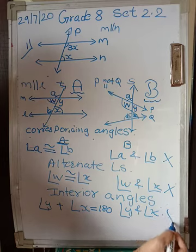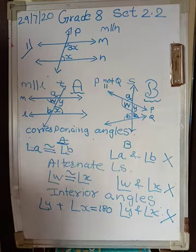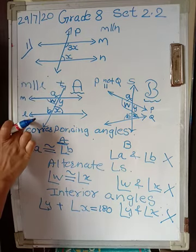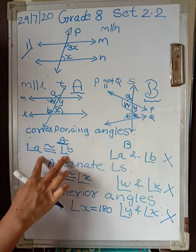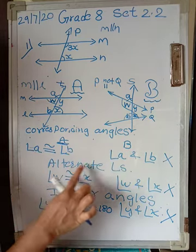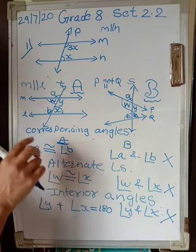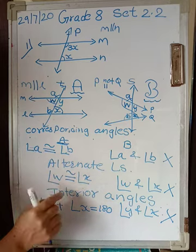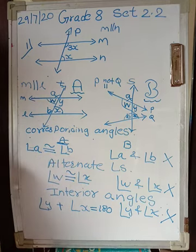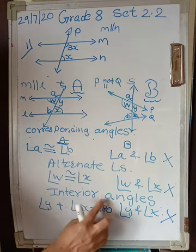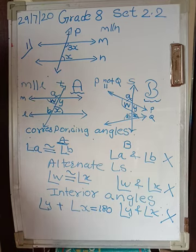So the supplementary property is not applicable if lines are not parallel. To summarize: if the lines are parallel and cut by a transversal, the two angles forming a pair of corresponding angles and the two angles forming a pair of alternate angles — in both cases those angles will be congruent. Whereas if the lines are parallel and cut by a transversal, the interior angle pair is always supplementary, meaning their sum is 180 degrees.